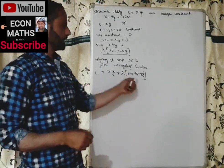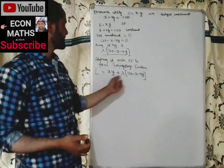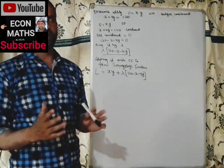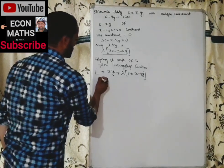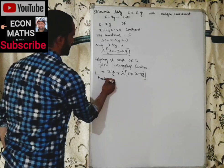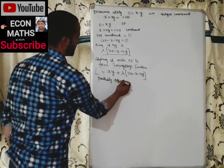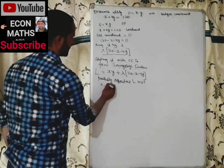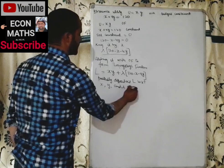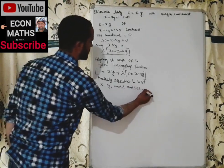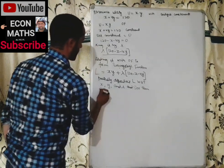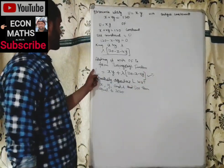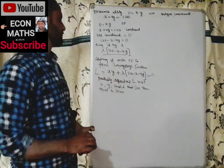To get the optimal values of x, y, and lambda, we must partially differentiate the Lagrangian function with respect to x, y, and lambda, and set each partial derivative equal to zero.